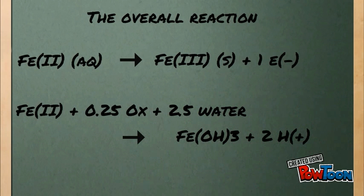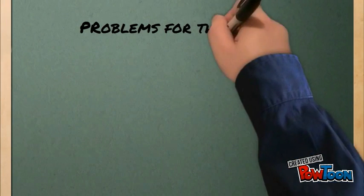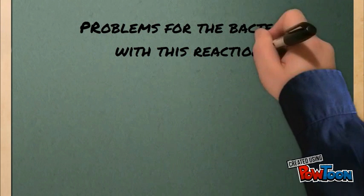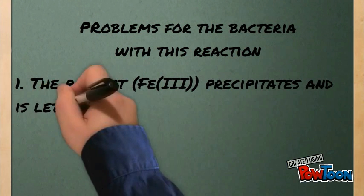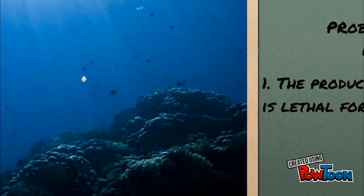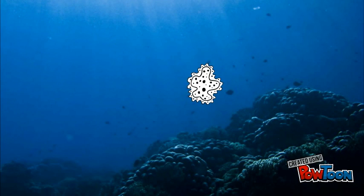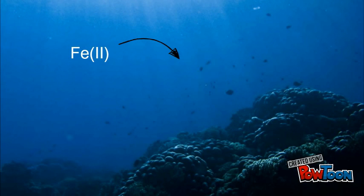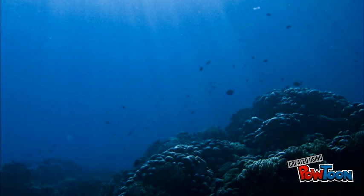What immediately stands out is that the product is a solid. There are a few problems with these reactions. First of all, the product, in contrast to the substrate, precipitates. If the toxic ferric iron is not dealt with, it will accumulate and kill the microorganism. Over time, the microorganism has developed inventive ways to eliminate this problem.